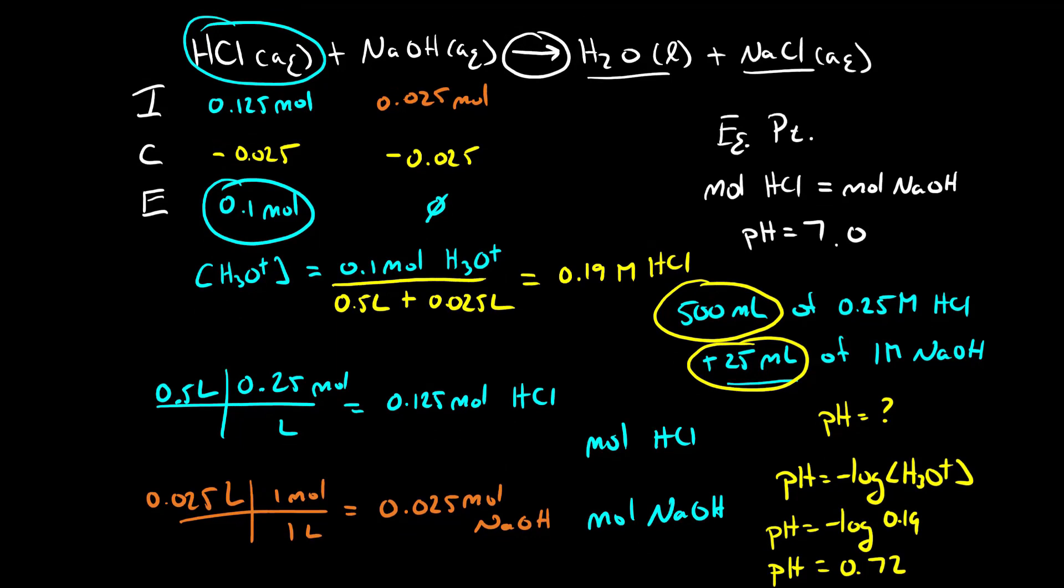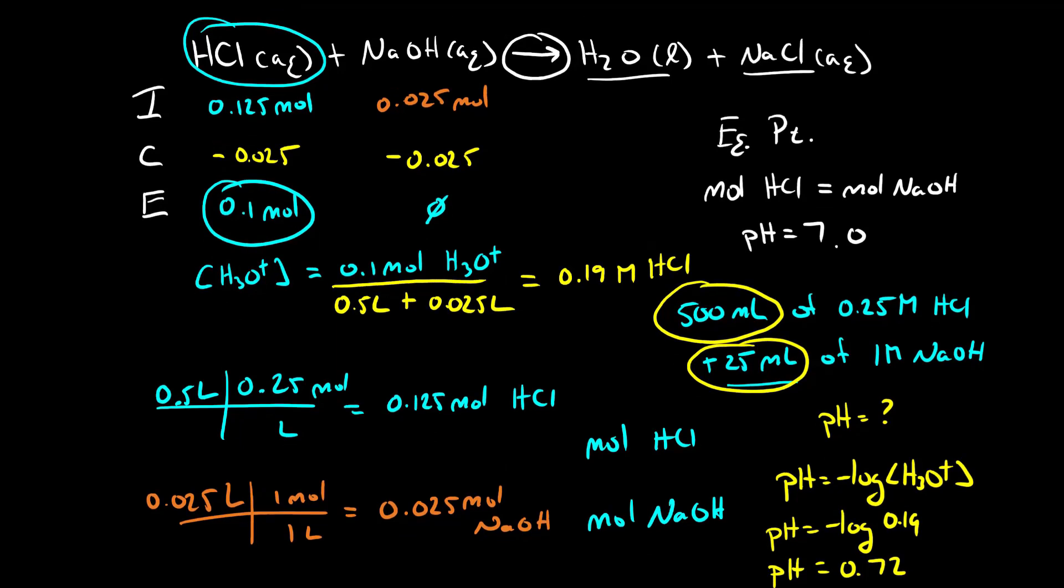As an overview, when you want to do these types of calculations the first step is to set up an ICE table where you're dealing with moles. Figure out how many moles of your acid and your base that you have. We were given information about the volume and the concentration so calculate moles. Then figure out your limiting reactant. Set up your ICE table to complete it to figure out how much acid you have left over.